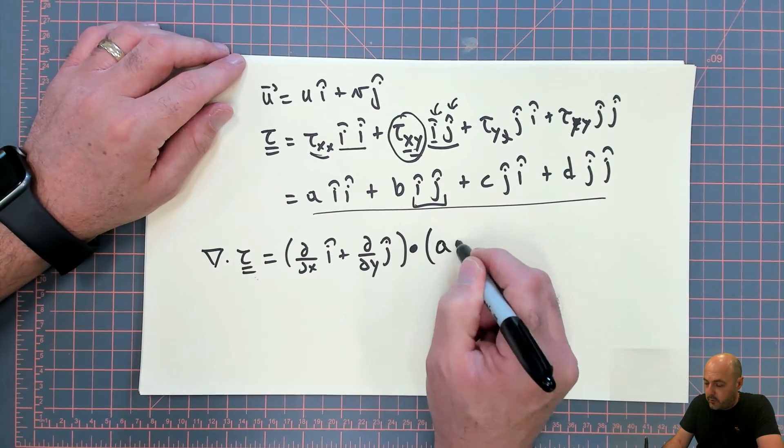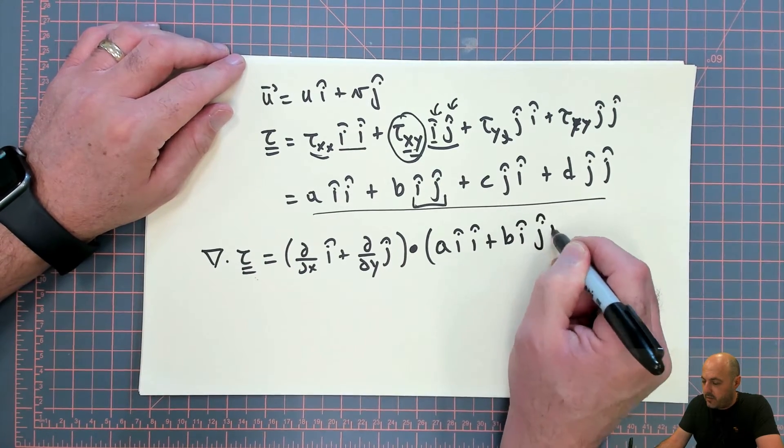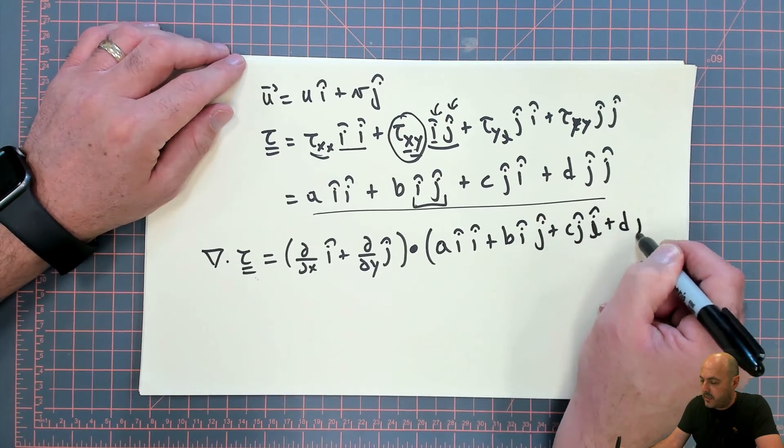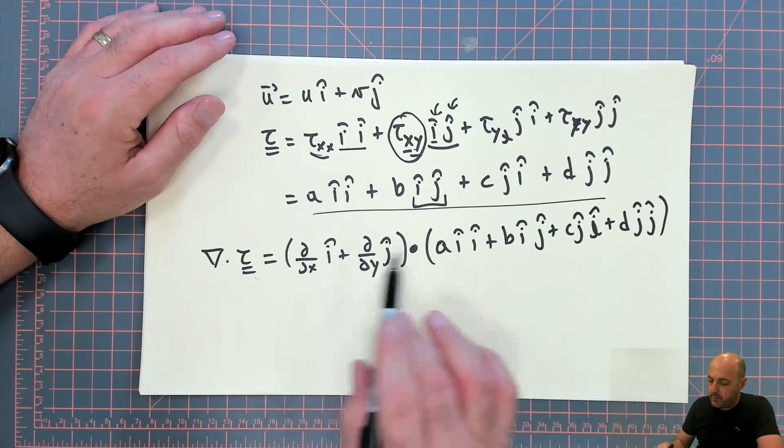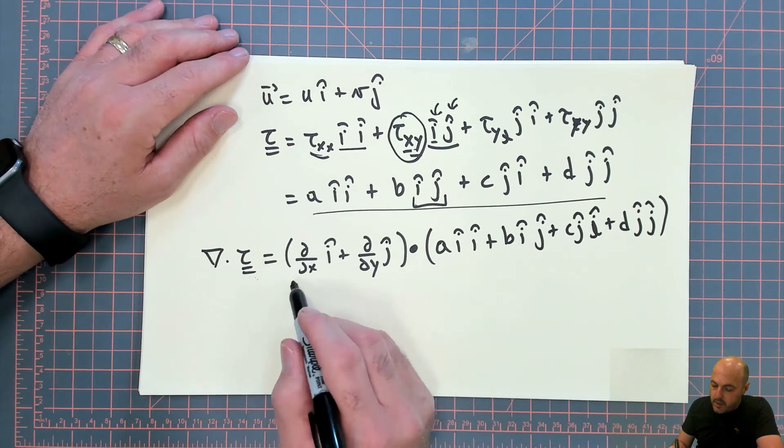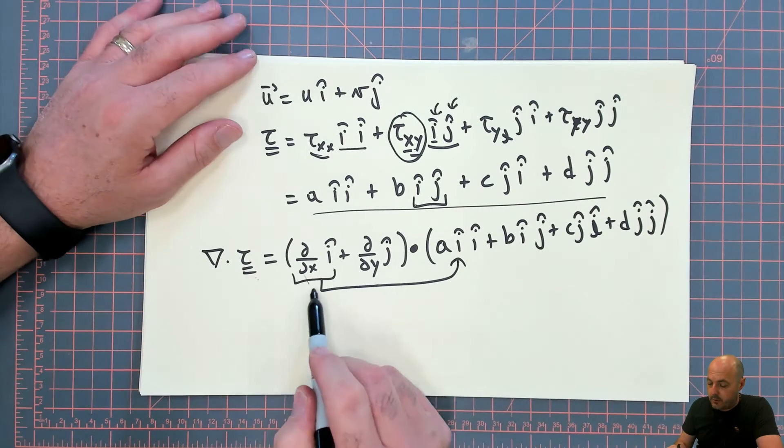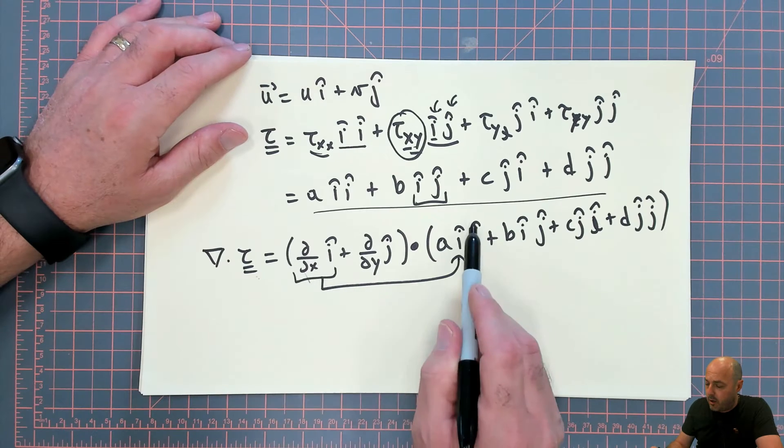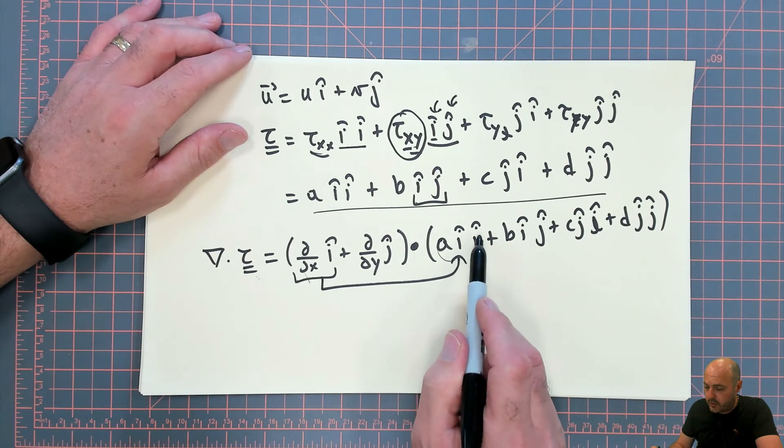I'm going to do a ii plus b ij plus c ji plus d jj. And then you simply carry out the multiplication as if you're just doing dot products. So d/dx i dotted with a ii. Now you simply do this dot product and then you apply this on the entire term over here.